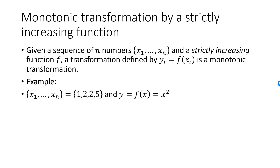Here is an example. I start with the sequence of 4 numbers: 1, 2, 2, and 5. I create a transformation from the function y = x². This function is strictly increasing if we restrict the domain to the positive numbers. My new sequence will be 1, 4, 4, and 25. Since f is strictly increasing, order must be preserved.